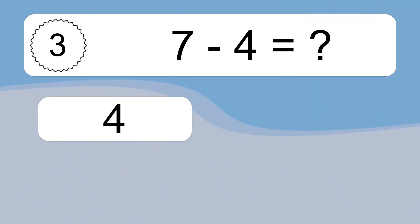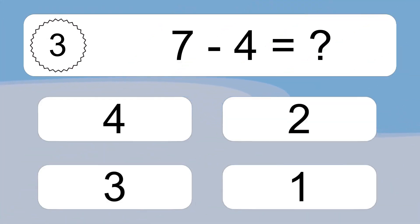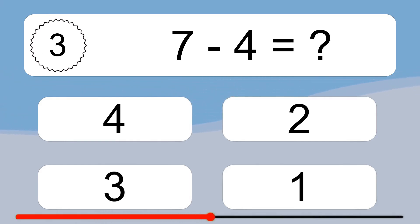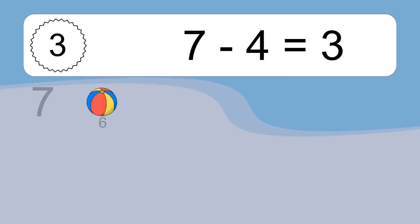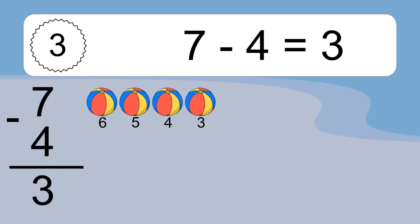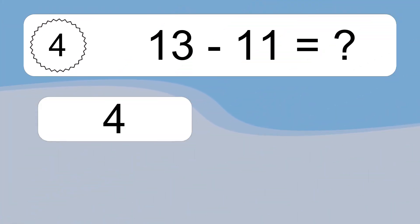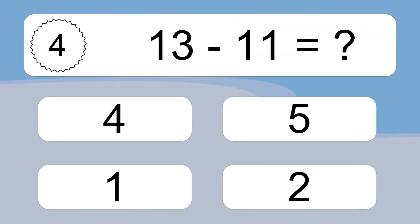7 minus 4 equals what? 7 minus 4 equals 3. Let's count it: 6, 5, 4, 3.